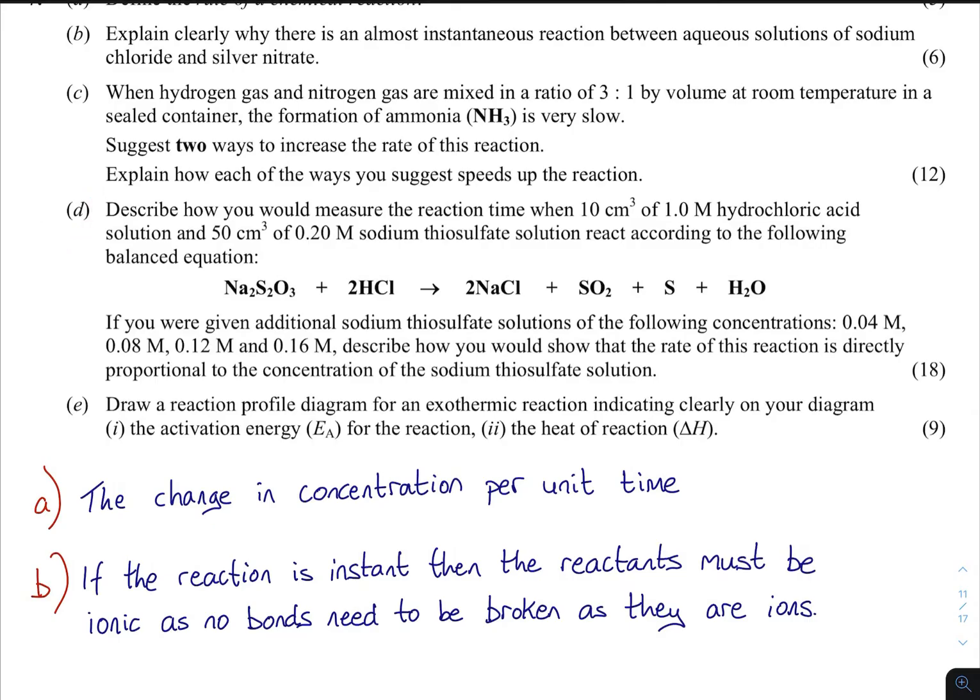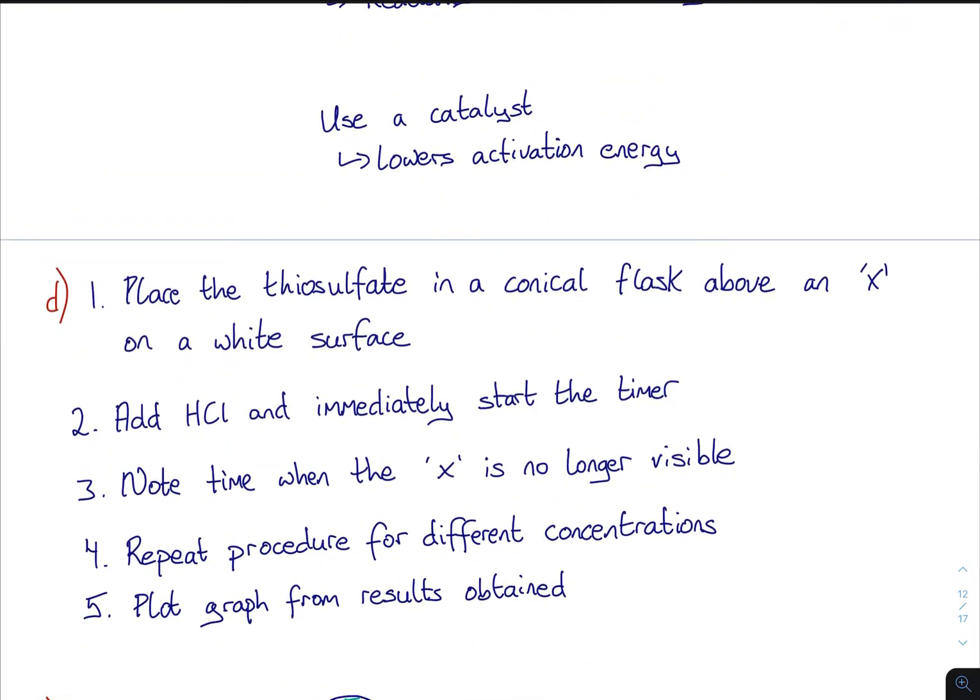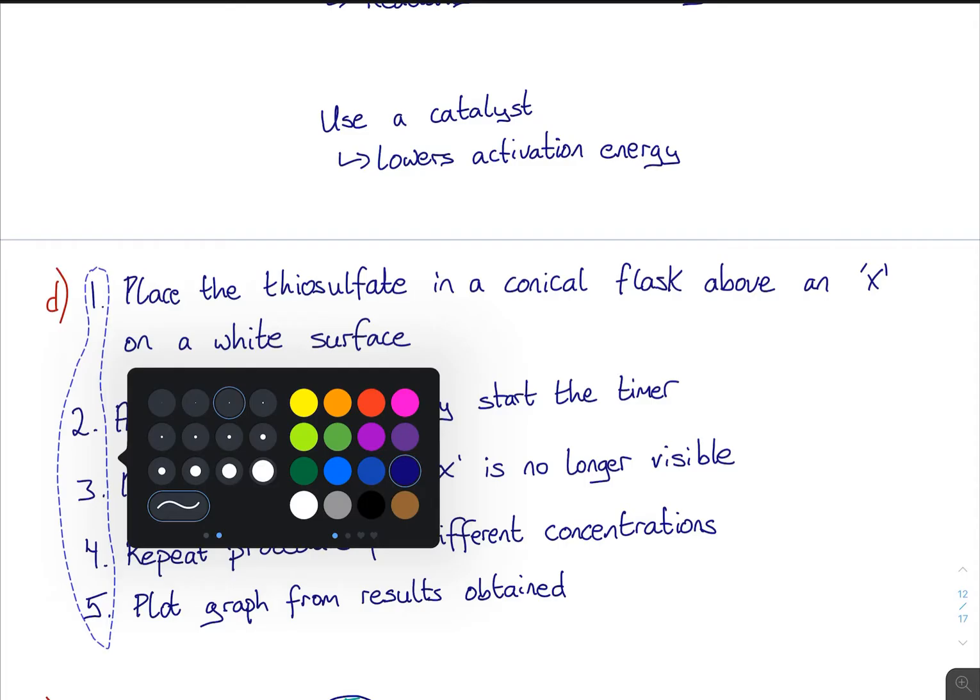There's a couple of different ways you can say: use a catalyst to lower the activation energy; increase the temperature so the reactants have more energy and they're moving faster, so they're more likely to meet that activation energy; and finally you can increase the concentration of the reactants - more reactants means more collisions. You could probably have said reduce the container or increase the pressure.